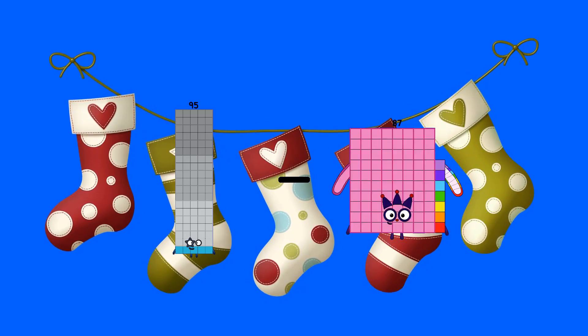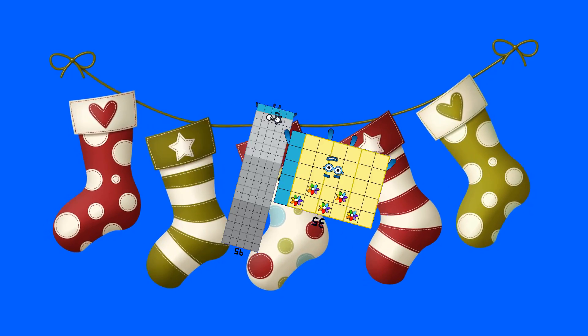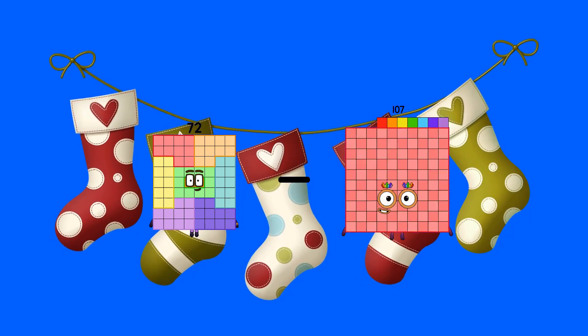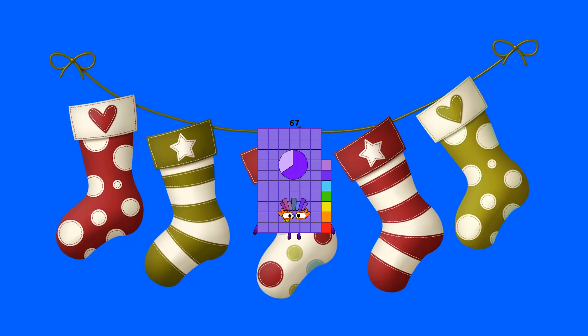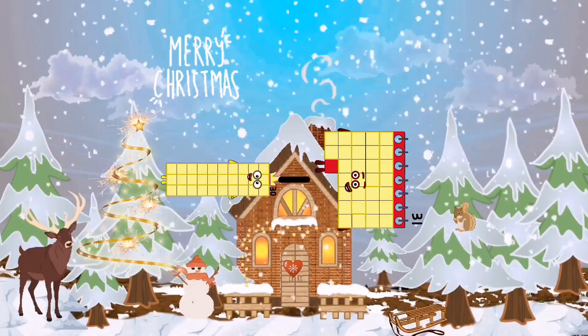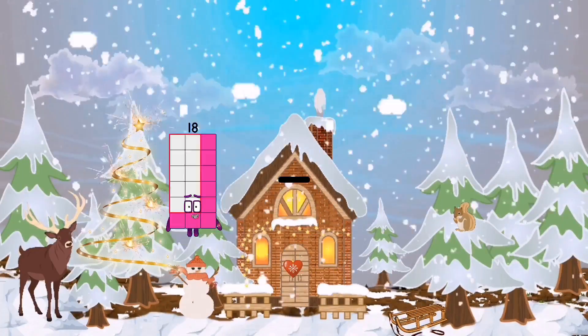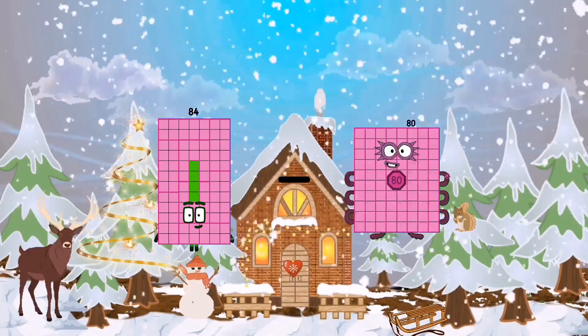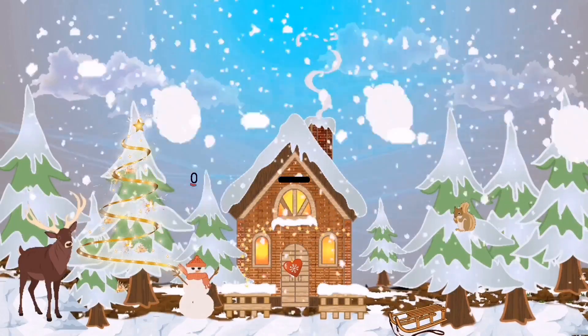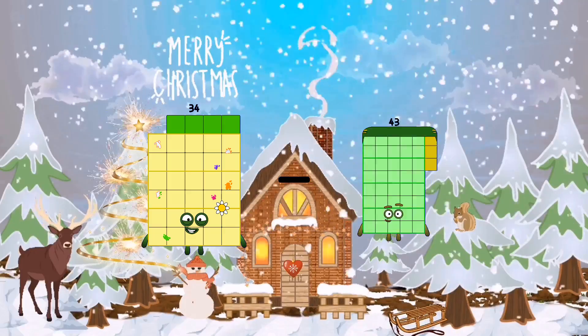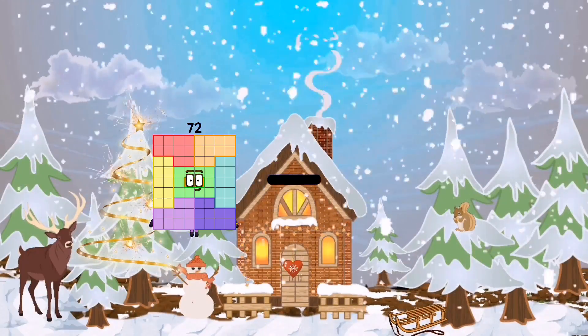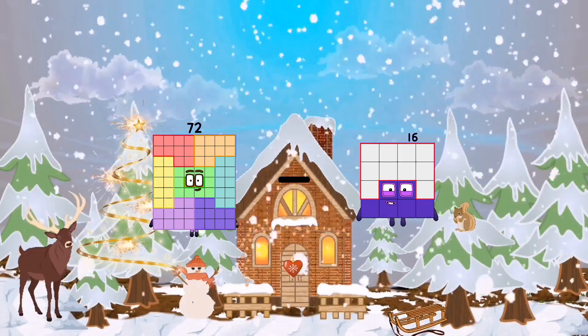95 minus 35 equals 60. 72 minus 5 equals 67. 30 minus 31 equals 214. 84 minus 84 equals 79. 34 minus 4 equals 30. 72 minus 4 equals 16. 16 equals 56.